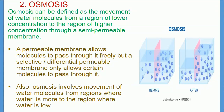Number two: osmosis. Osmosis can be defined as the movement of water molecules from a region of lower concentration to a region of higher concentration through a semipermeable membrane. A cell membrane or permeable membrane can allow molecules to pass through it freely, but a selective, differential, or semipermeable membrane only allows certain molecules to pass through it.